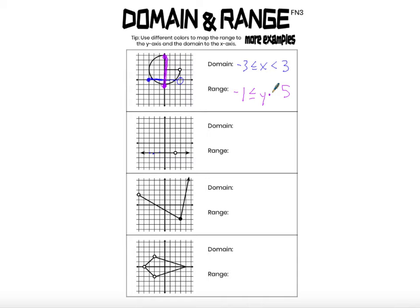We need to verify that this open dot with a y-coordinate of 2 does not change the range. By the way, y also can't equal 2 — but we verify that by making sure there's another point on the graph with a y-coordinate of 2, and there is. So because this point exists along with all of these infinite points on this line segment, we can say y equals 2 is in the range, and this open dot does not affect the range.